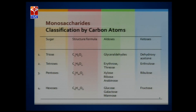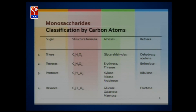Monosaccharides are classified based on two criteria: the carbon number present in their structure, and the functional groups present in their structure. Based on carbon number, monosaccharides are divided into trioses, tetroses, pentoses, hexoses, heptoses, and so on. Trioses — 'tri' means three — have the empirical formula C3H6O3. Examples include glyceraldehyde and dihydroxyacetone.